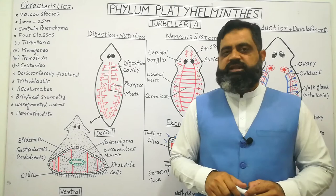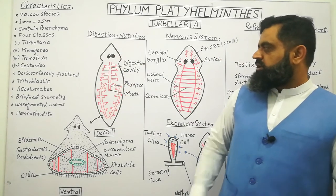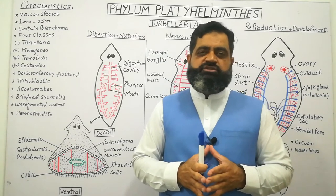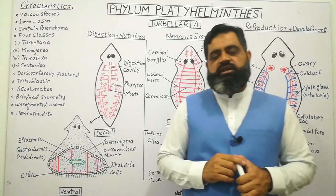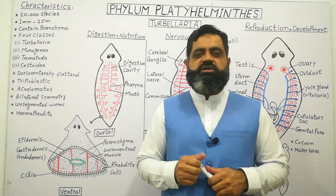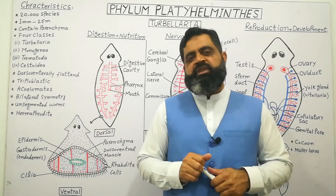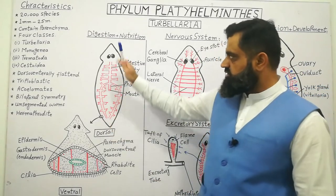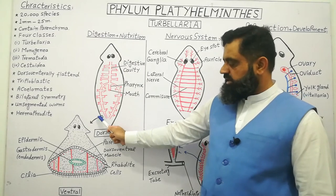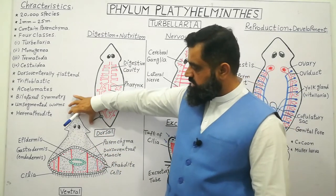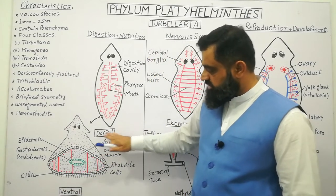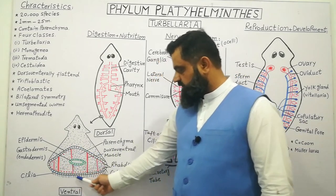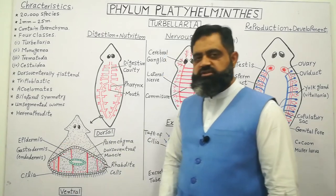The best example of a turbellarian is planaria, as you can see in this diagram. They are free-living animals which live in freshwater as well as in marine water. They range in size from one millimeter to several centimeters. Regarding their body wall structure, if we take a cross section of this animal, the anterior side and posterior side can be identified. In the cross section, one side is dorsal and the other is ventral. The outermost layer of cells is known as epidermis, also known as ectoderm.